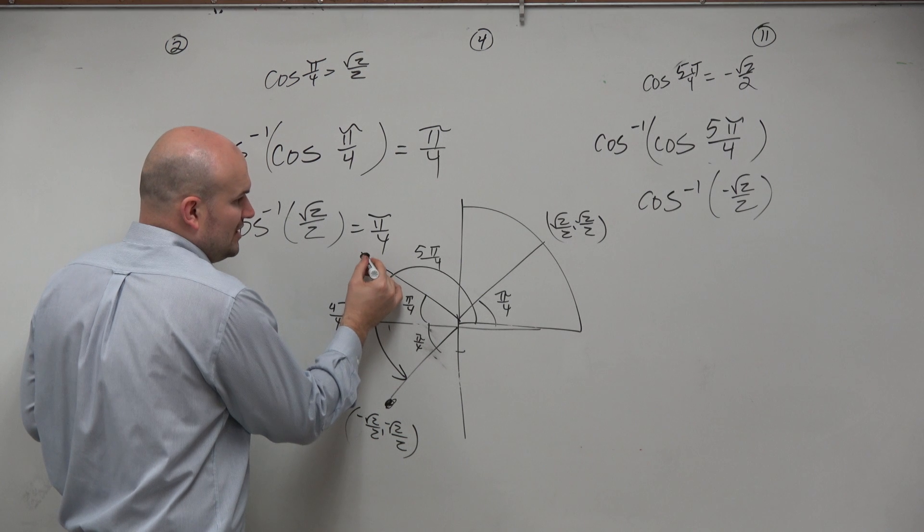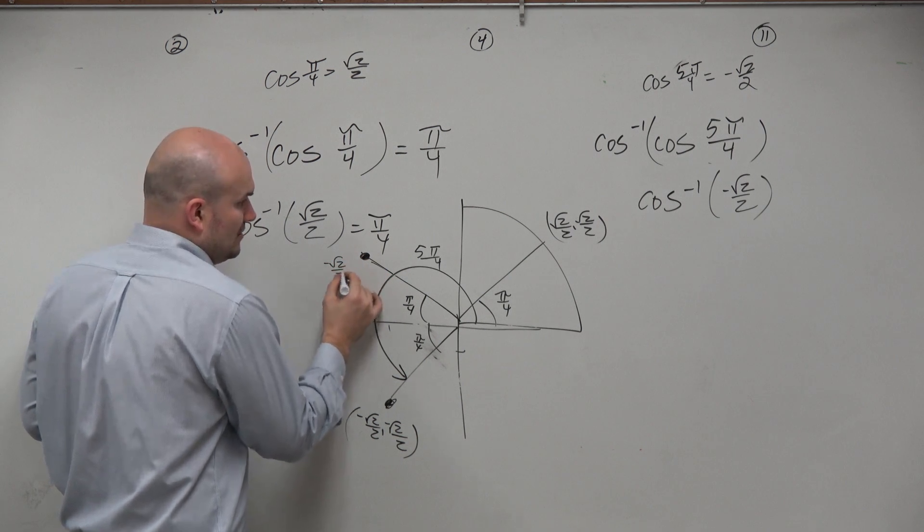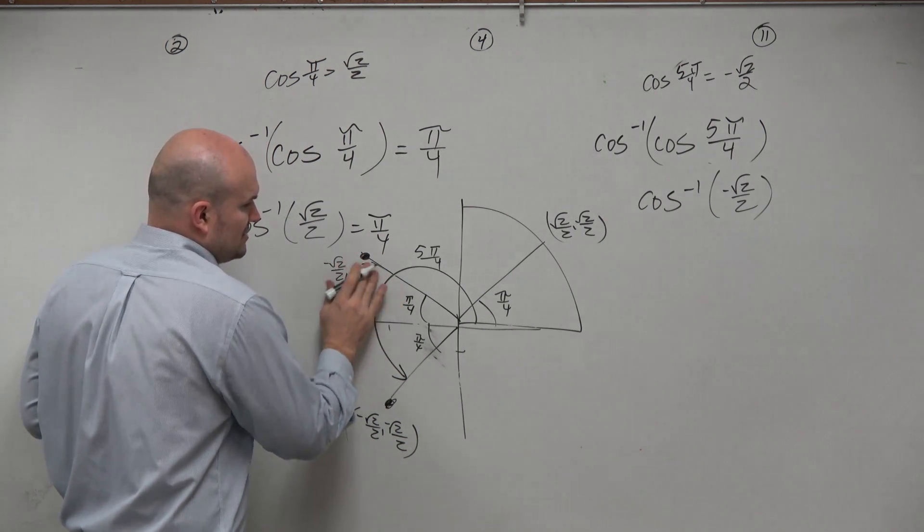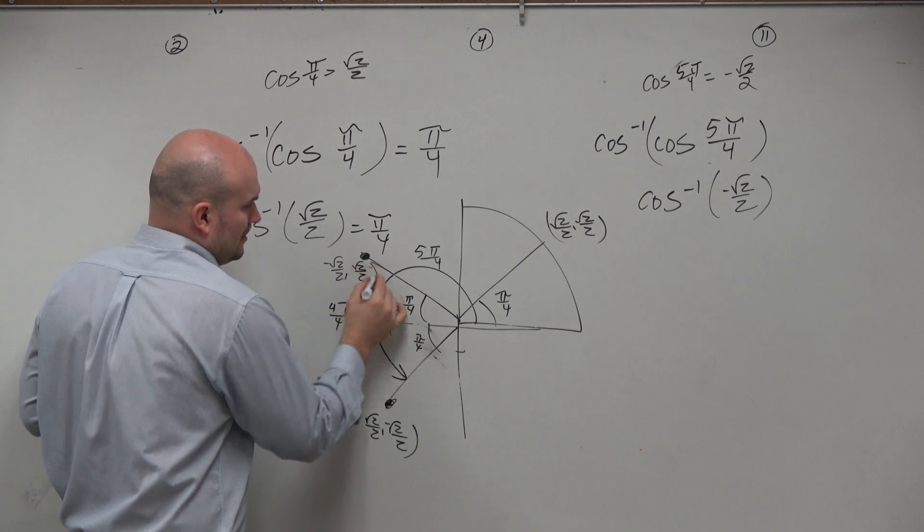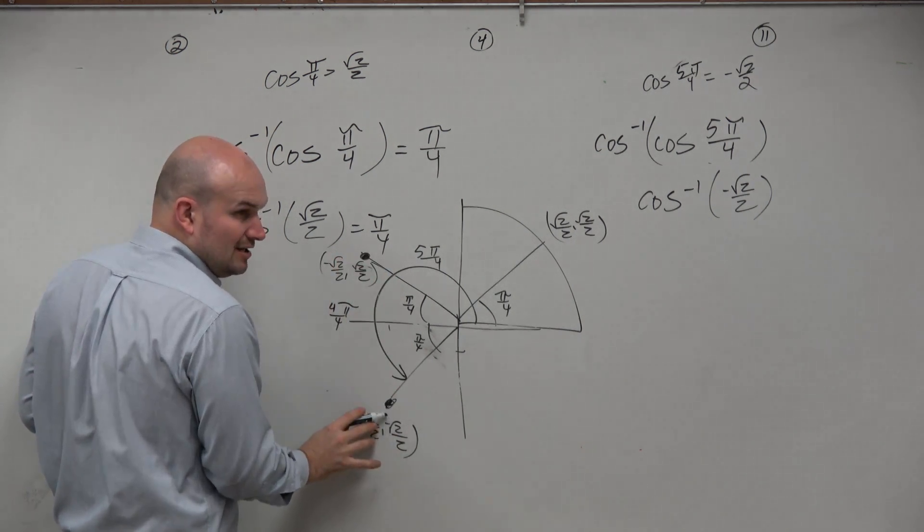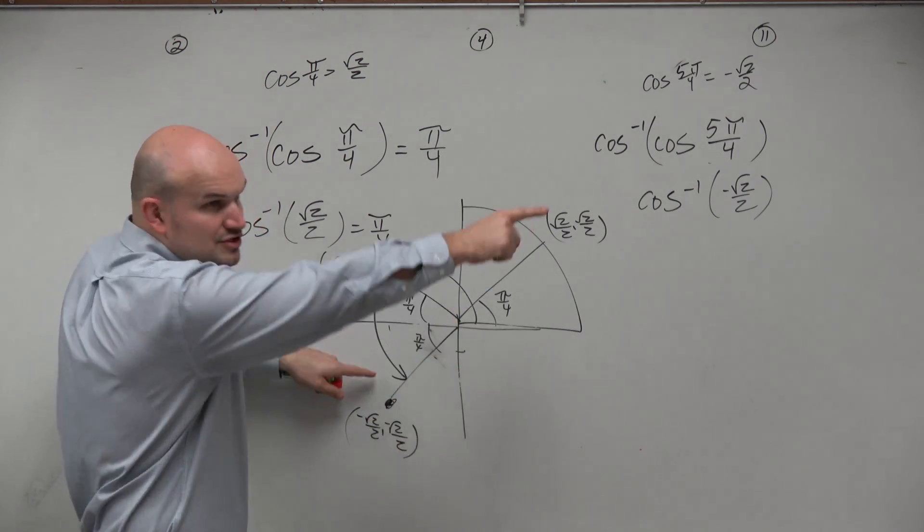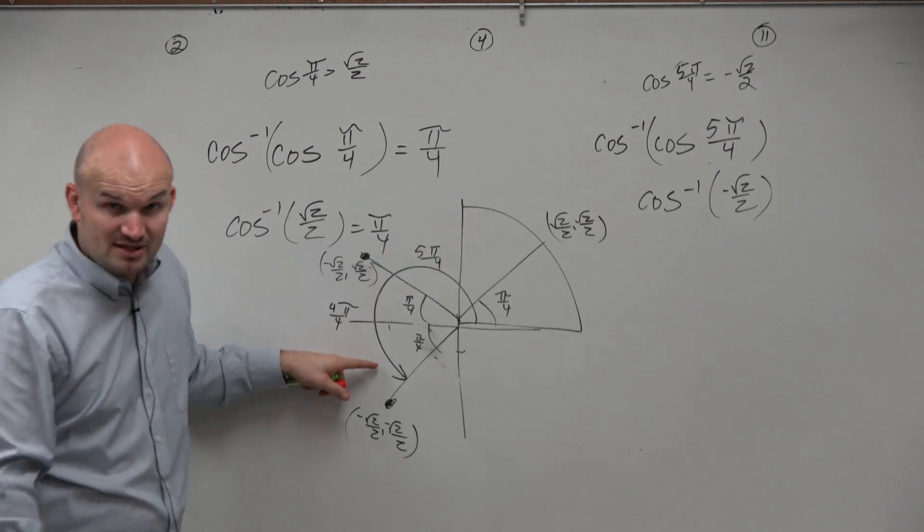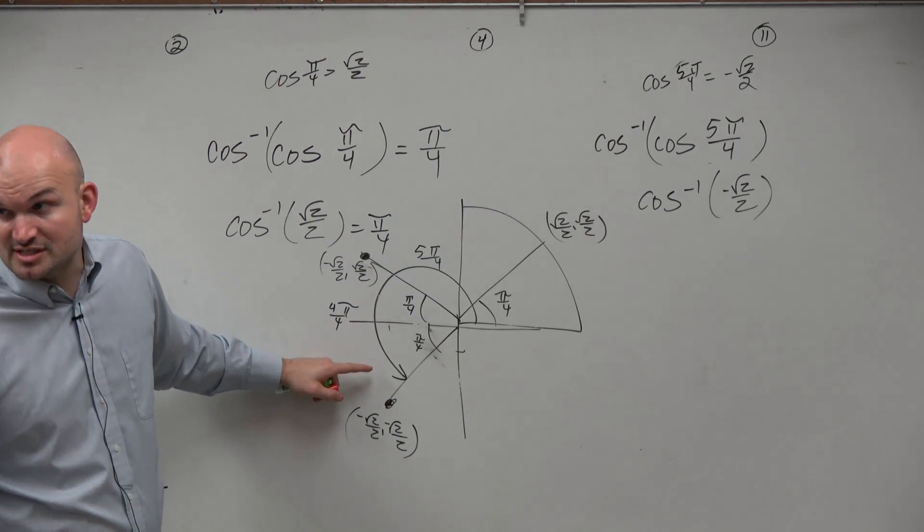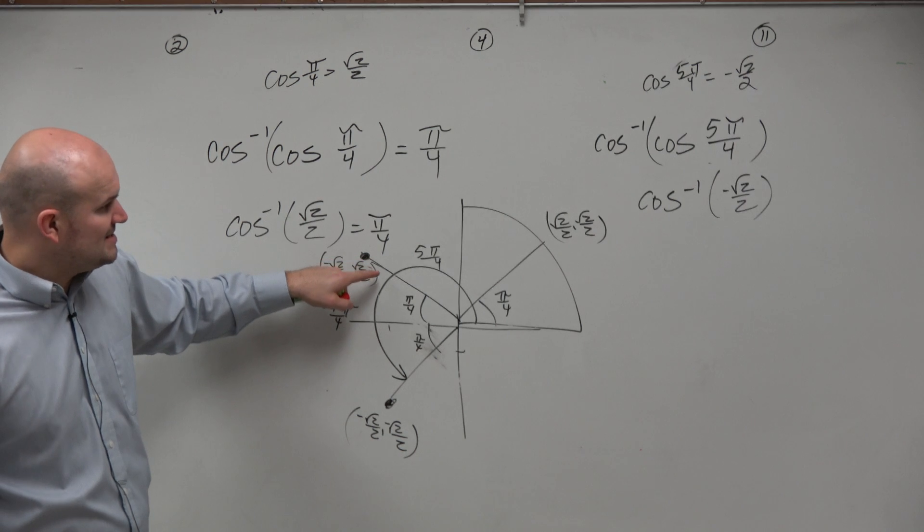Well, that point is only going to be negative here and here. But did this angle meet the domain restrictions of cosine? No, because it's in the third quadrant. Domain restrictions is the first and the second. So that means it has to be this angle.